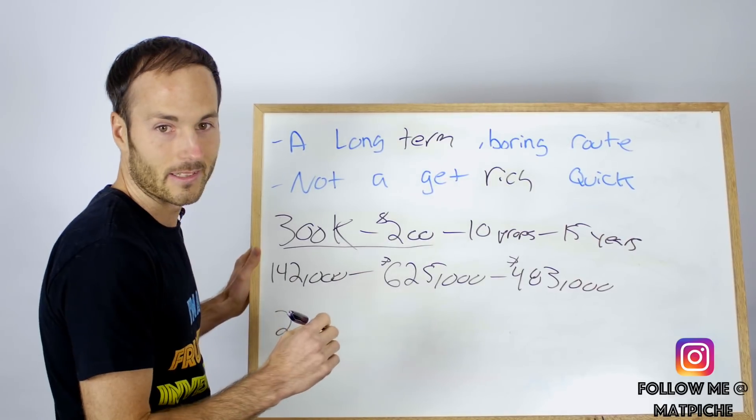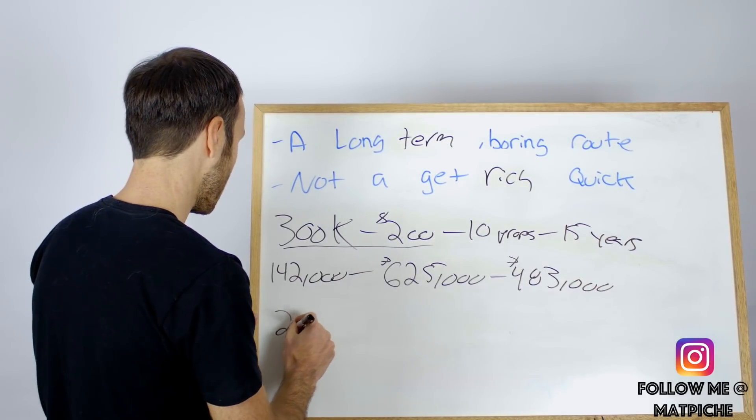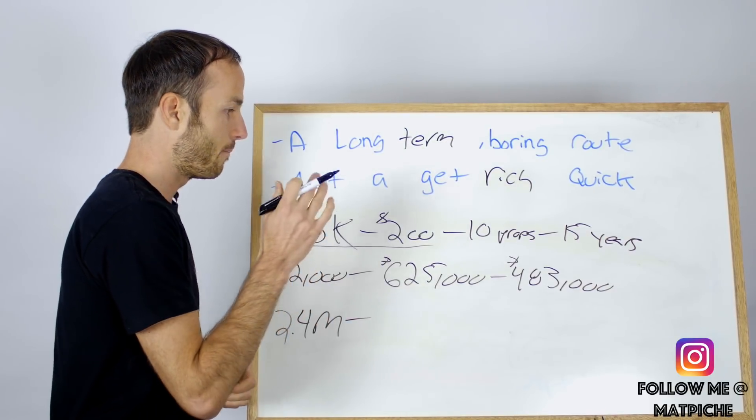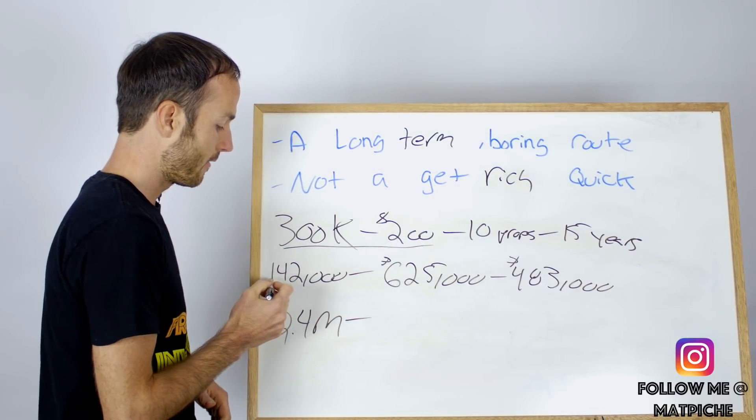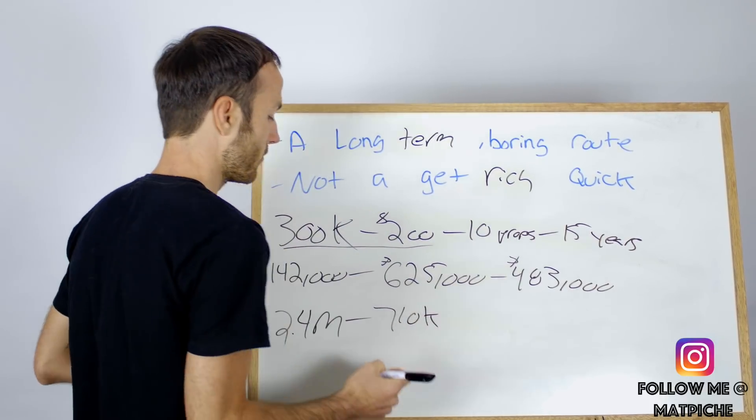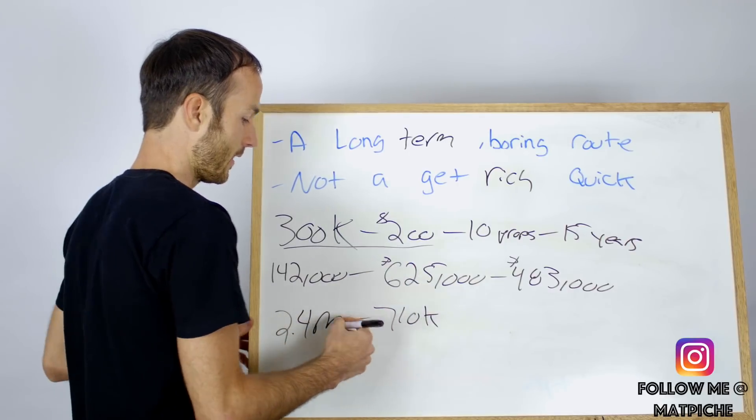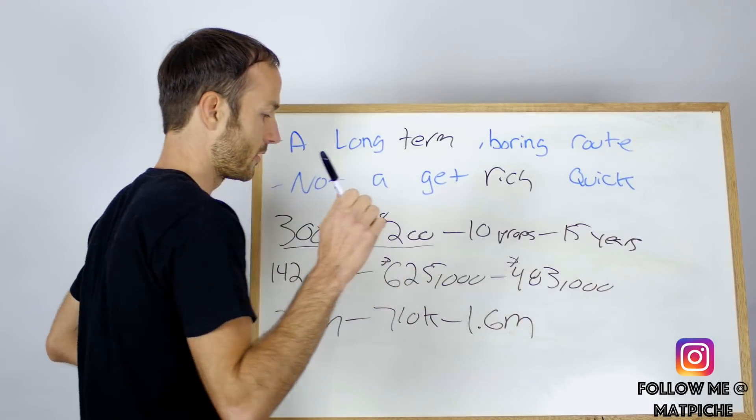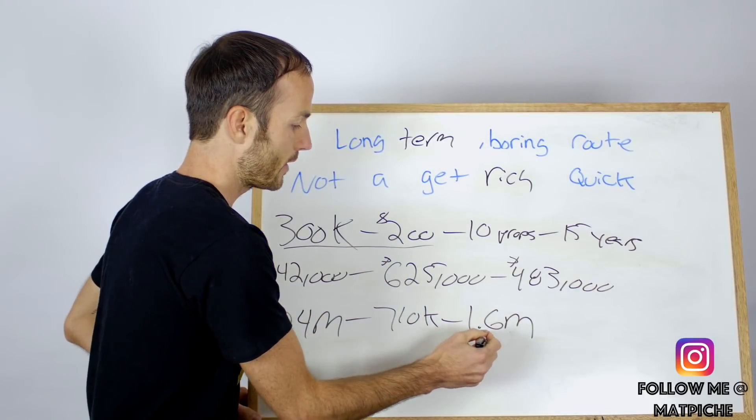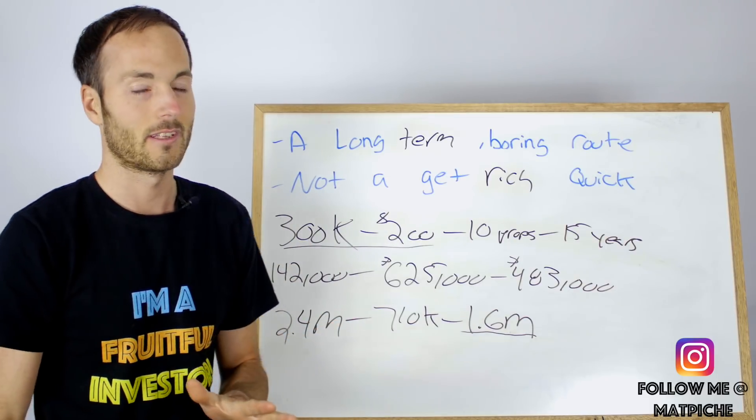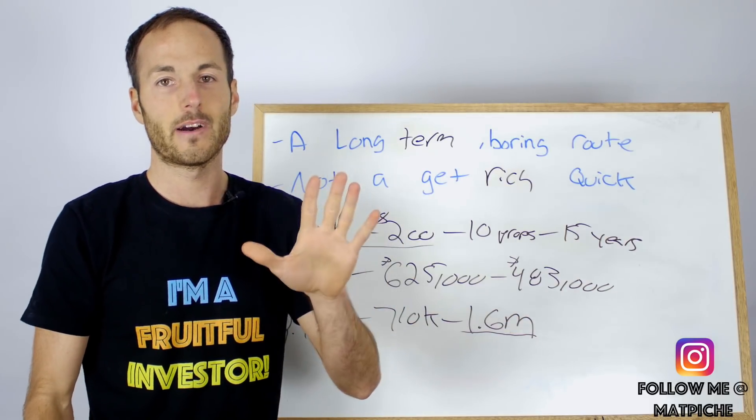So what we're going to do is we're going to sell five of the ten properties, which will give us a profit of $2.4 million dollars. Now if we want to buy out five properties, it's $142,000 times five, approximately $710,000 we need, which will leave us with a profit of $1.6 million dollars. So we're going to have $1.6 million dollars cash after paying off five properties.